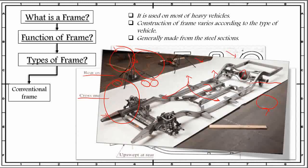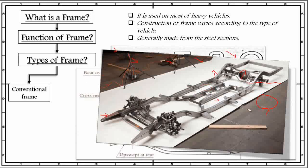This is a real-life example of a conventional frame. As we can see in this frame, these are the side members and these are the cross members, which have different construction as we have discussed earlier.